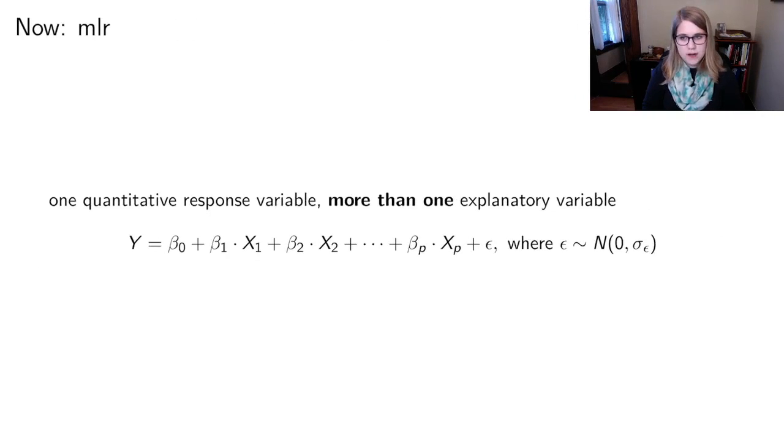Now we're moving on to a multiple linear regression where we still just have a quantitative response variable, but we have more than one explanatory variable. So we could have beta 1, beta 2, beta 3, beta 4, all the way out to beta p. We still are assuming that our residuals are normally distributed, but we can have lots more explanatory variables. And then we just fit more coefficients.